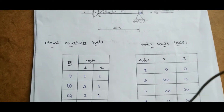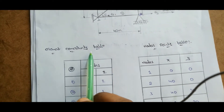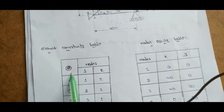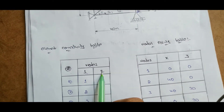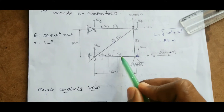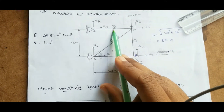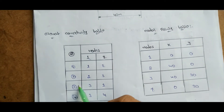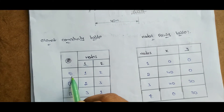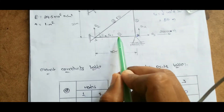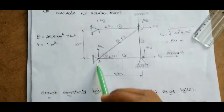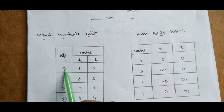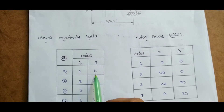The first step in this problem is to write the element connectivity table. You have to draw a table with element number and nodes 1 and 2, where 1 and 2 indicate the starting node and ending node of the element. There are four elements: 1, 2, 3, and 4. For element number 1, from the diagram, the starting node is 1 and the ending node is 2.